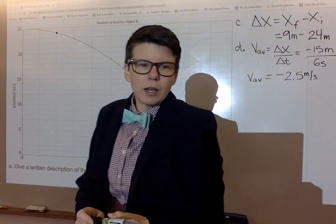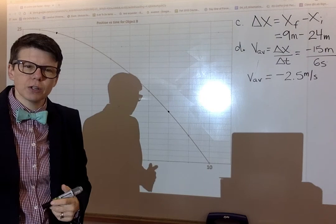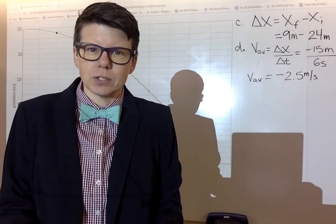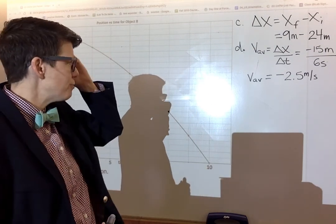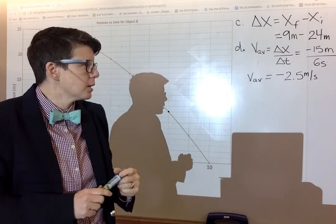But you can recognize by looking at this graph, clearly this object is changing velocity. The position graph does not have a constant slope. This object is definitely changing velocity, so that average represents that whole time interval from two to eight seconds.